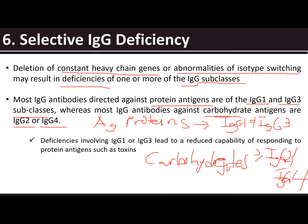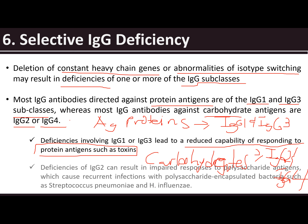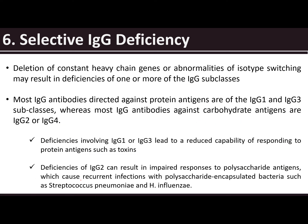Deficiencies involving IgG1 or IgG3 can lead to reduced capability of responding to protein antigens such as toxins. Deficiencies of IgG2 result in impaired responses to polysaccharide antigens, which can cause recurrent infection with polysaccharide-encapsulated bacteria such as Streptococcus pneumoniae and Haemophilus influenzae.